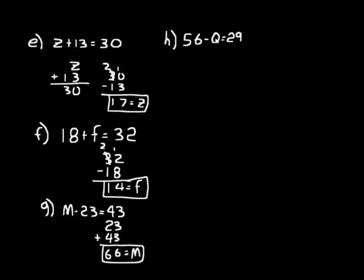Look at this problem: 56 minus Q equals 29. Remember, when you have several similar problems, pause and try it yourself, then fast forward to check. You're trying to find what to subtract from 56 to get 29. Remember, in a subtraction problem when you're given the smaller number, take the difference of 56 and the difference they gave you, 29. So: 56 minus 29 — 16 minus 9 is 7, 4 minus 2 is 2. So Q equals 27.